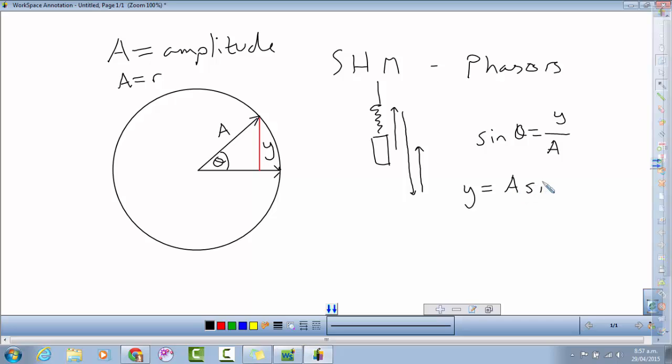Now you may remember that theta, because that's the angular displacement, is equal to the angular velocity times time. If you consider it in terms of a linear equation that you're more familiar with, that came from distance equals velocity times time, and then we turn that linear equation into this angular equation. And so that allows us to substitute in for theta, so we get the equation y equals A sin ωt.